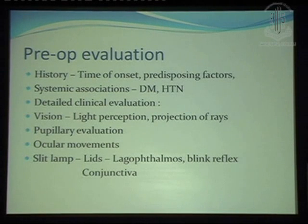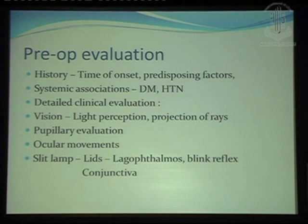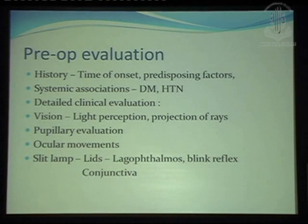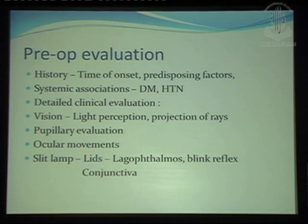The primary pathology for which you are doing the therapeutic keratoplasty is extremely important. Sometimes you might land up with a patient whose whole cornea has melted and you have no clue what happened in the past. You need to go back and dig deep to find out the primary etiology — what led to the corneal melt. Systemic associations are extremely important. In fungal infections, diabetes can cause havoc; no matter what drug you use, the patient just doesn't respond, so you have to do a therapeutic keratoplasty.